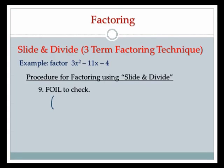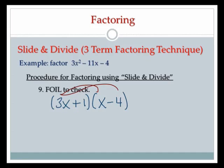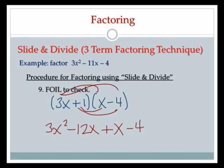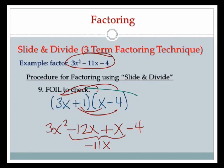To check, I'll FOIL. You can use a box method or double distributing — choose what you like. Distributing 3x: 3x times x is 3x squared; 3x times negative 4 is negative 12x. Distributing 1: 1 times x is positive x; 1 times negative 4 is minus 4. Combining like terms: negative 12x plus x gives negative 11x. So I have 3x squared minus 11x minus 4, which is exactly what I started with. Final answer: the quantity 3x plus 1 times x minus 4.